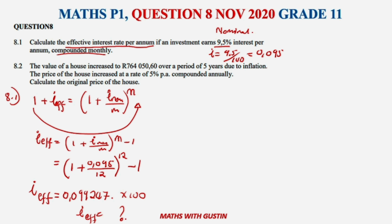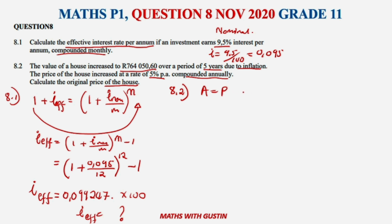Now let's move to 8.2. The value of a house increased to R764,050.60 over a period of five years due to inflation. The price increased at a rate of 5% compounded annually. We need to calculate the original price of the house. Normally they ask us to calculate the value after inflation, but this time they're asking us to work backwards to find the original price.